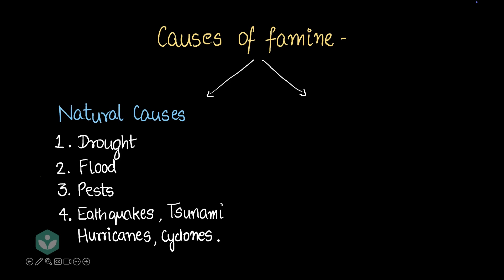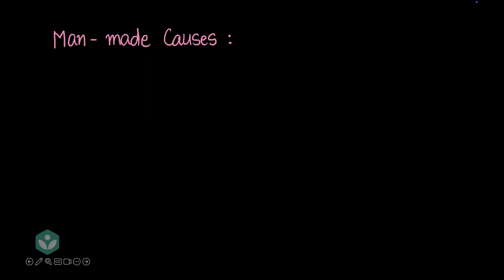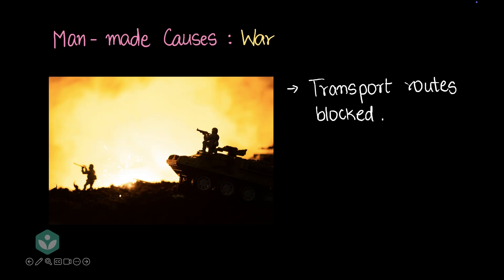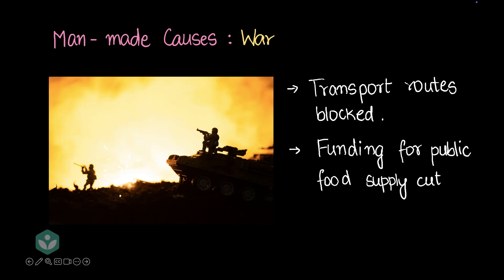Now we've discussed the natural causes. Moving on to man-made causes — the first is war. Today, in 2024–2025, war is the largest single cause of famine around the world. When there's a war, transport routes get blocked, borders get sealed, and people are left without food. Funding for public food supply is cut because all the funding goes towards the war. We've seen this happen recently in South Sudan in 2013.